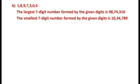The next question uses digits 1, 8, 9, 7, 3, 0, 4 — seven digits are given. The largest seven-digit number formed by arranging in descending order becomes ninety-eight lakh seventy-four thousand three hundred and ten. For the smallest, we write 1 first, then 0, giving us ten lakh thirty-four thousand seven hundred eighty-nine.